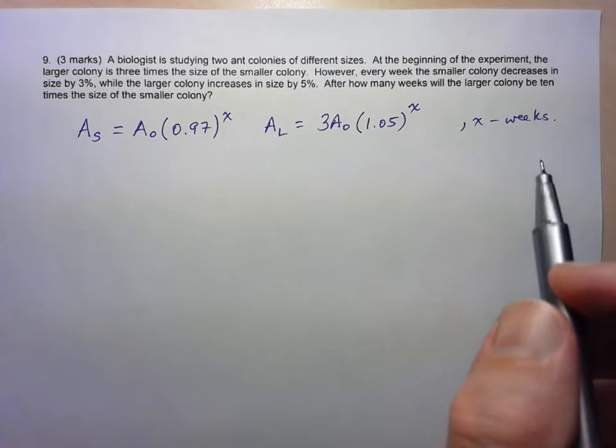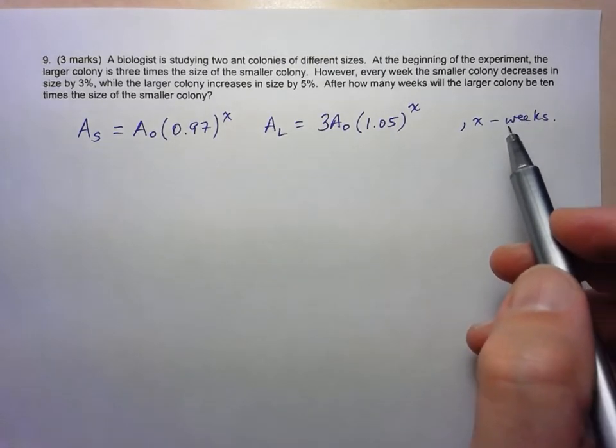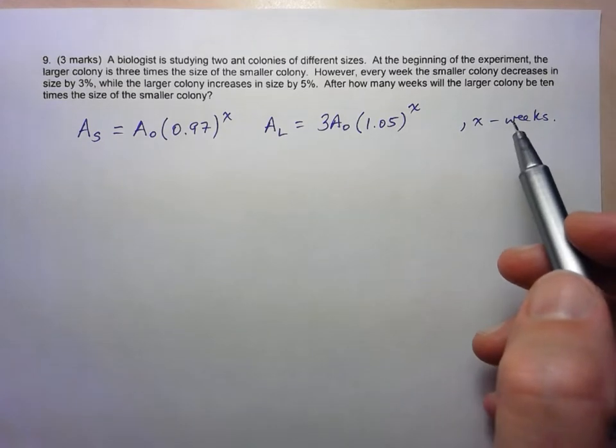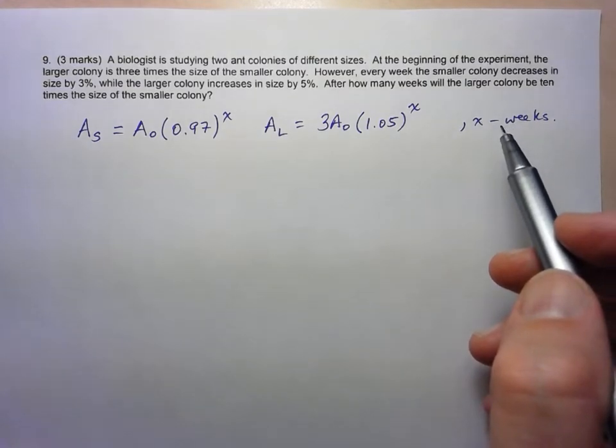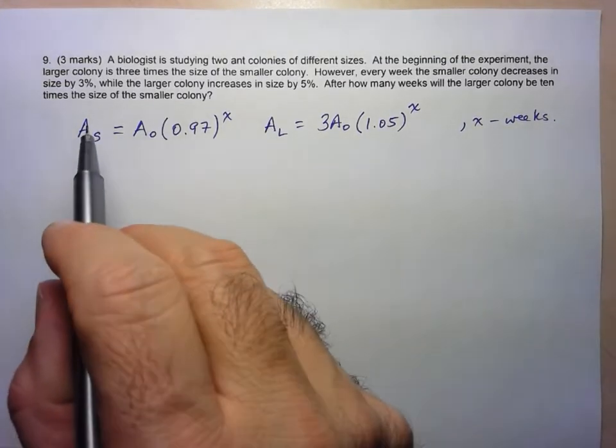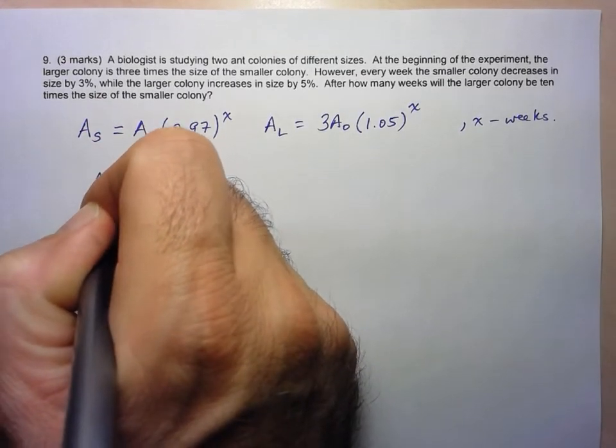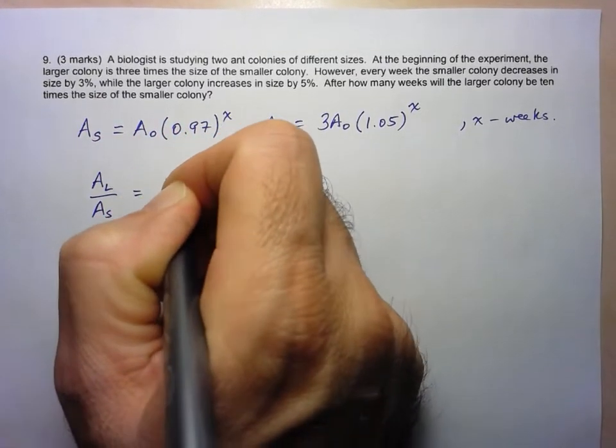So here, when we're talking about something being 10 times larger, 12 times larger, 3 times larger, the way we can work with that is by looking at the ratio of the two populations. So we know that the ratio of the larger population to the smaller population, so AL over AS, has to be equal to 10.